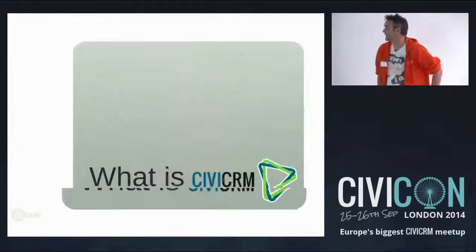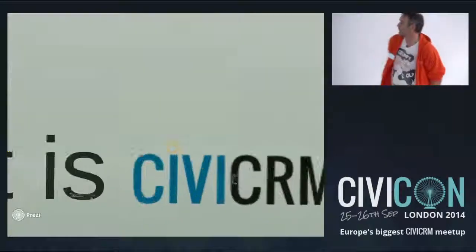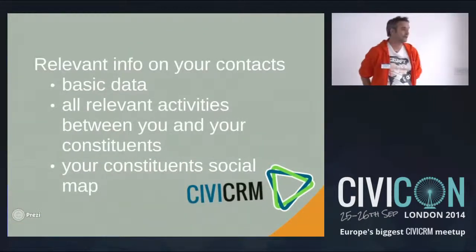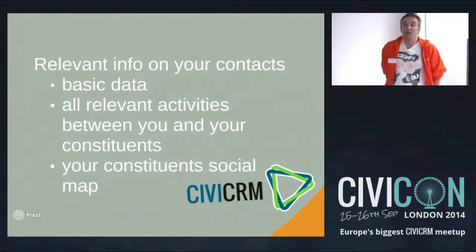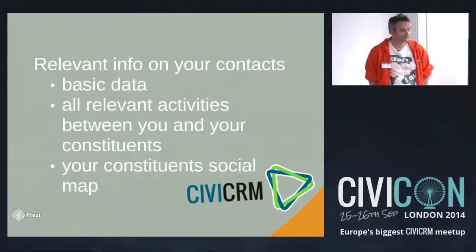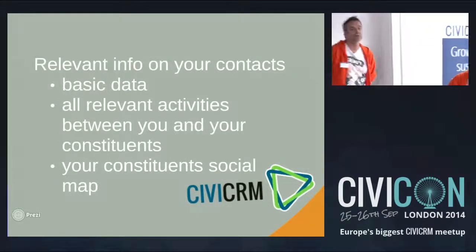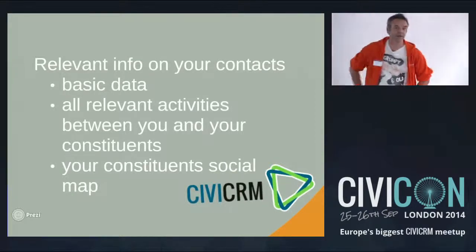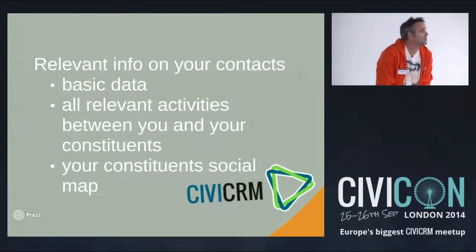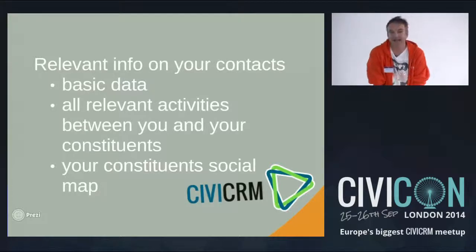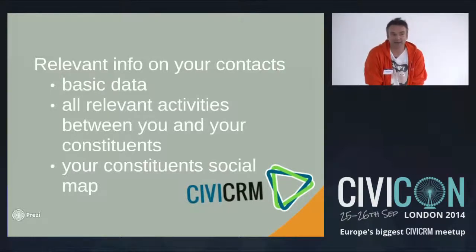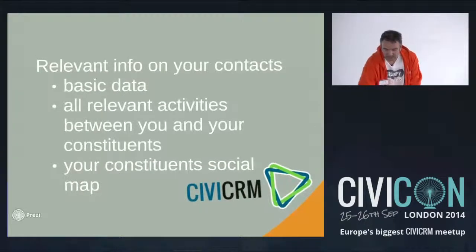What I would say CiviCRM is — for one thing, it gets you relevant info on your contacts: basic data, obviously as long as you've recorded them, and all relevant activities between you and your constituents, either way. And it provides you with your constituent social map — who are they, who do they have contacts with? That might be relevant for your organization in order to activate them or change your interactions with them.